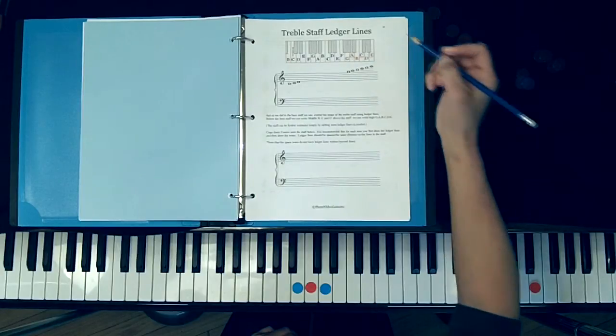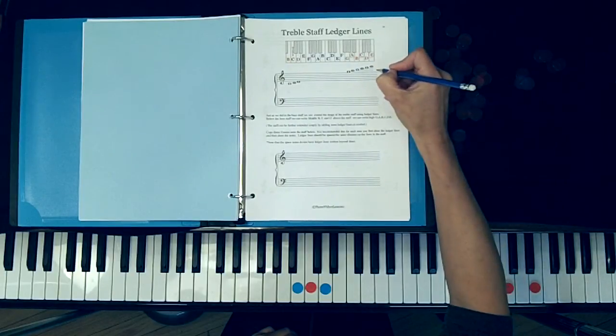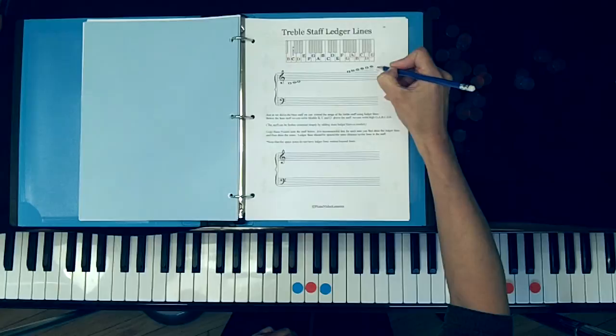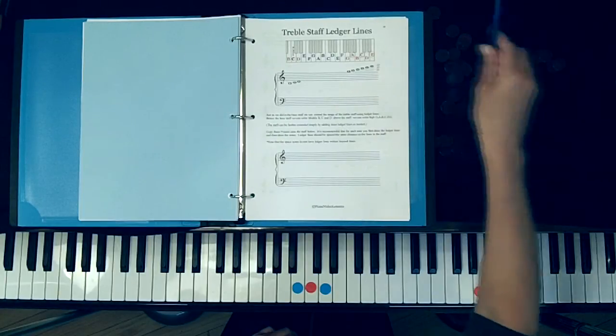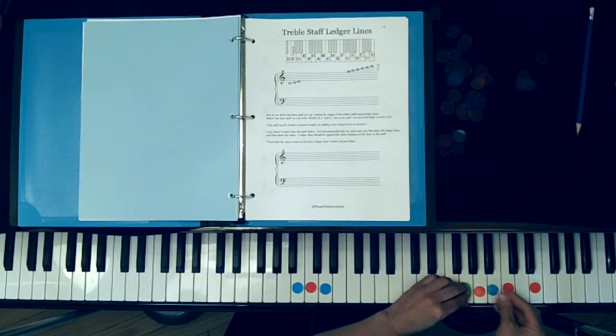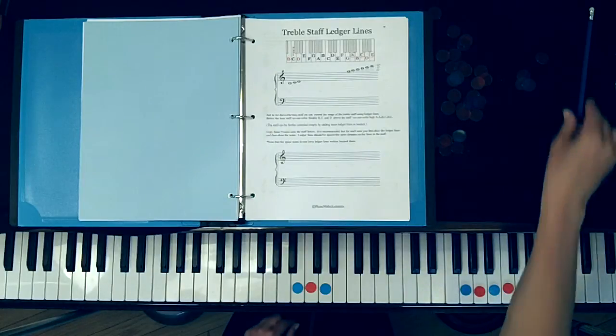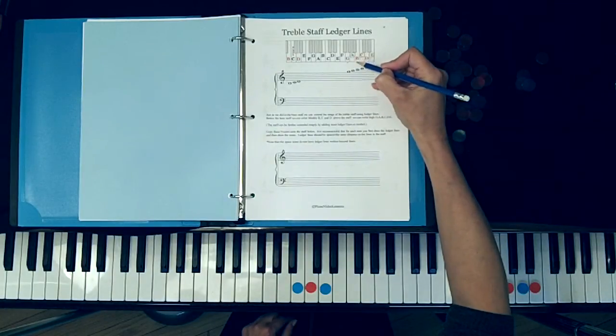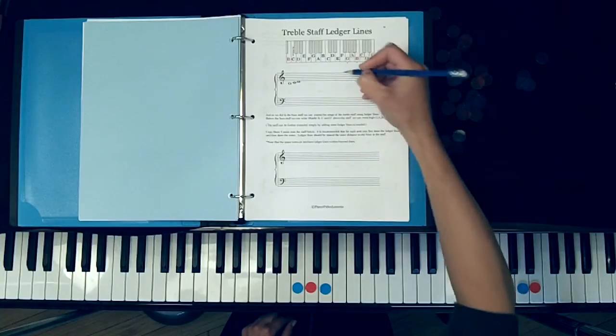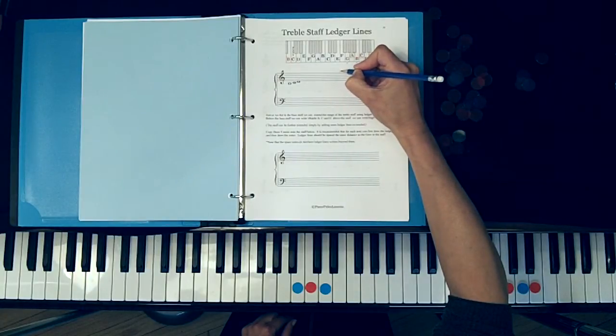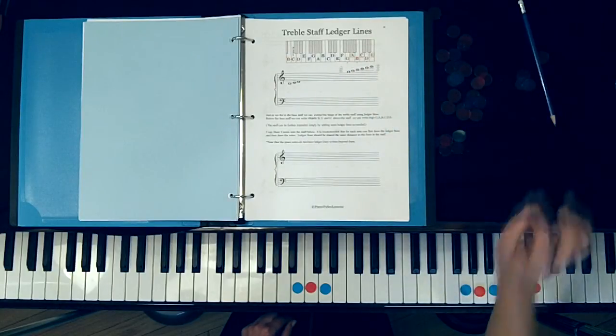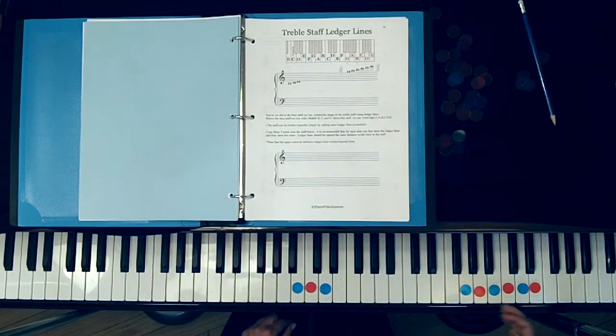We're going to be dealing with A, C, and E on lines, and if you notice it spells the word ace. We're also going to be dealing with the space notes G, B, and D.